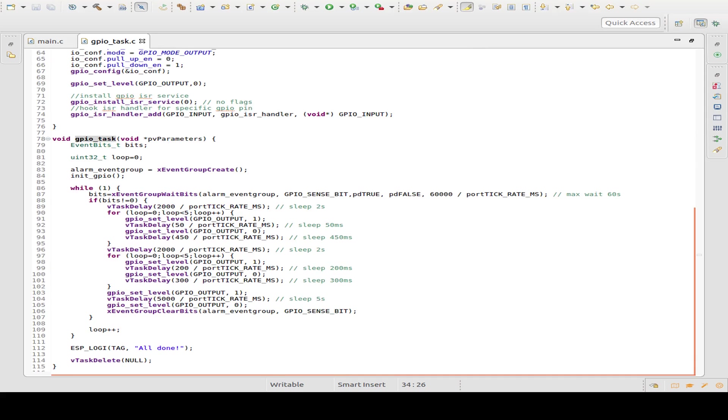Now back to our GPIO task. We just wait for the sense bit to be set. And then if it's set, I programmed a small task for our LEDs. So we wait for two seconds. Then we have 50 millisecond pulses and wait a little bit of time. Then we sleep for two seconds. Then we have our 200 millisecond pulses. And then we stay on for five seconds. And then we clear the bit. And the whole routine waits for the next interrupt.